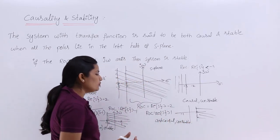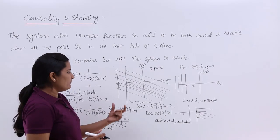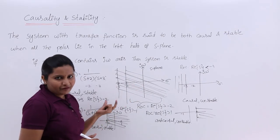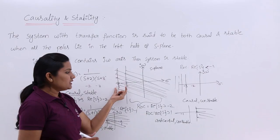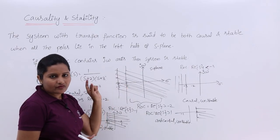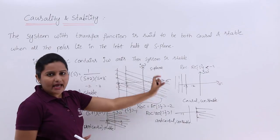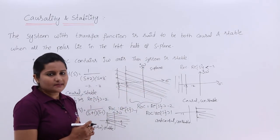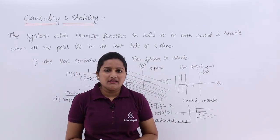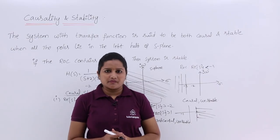In summary, for a system to be both causal and stable, all poles must lie in the left half of the S-plane with negative real parts, and the ROC must cross the jω axis of the S-plane. This is how we examine causality and stability in Laplace transform.